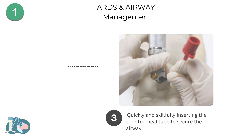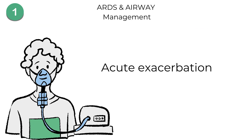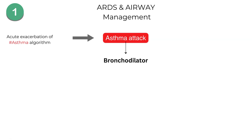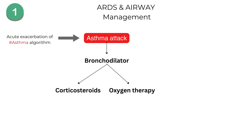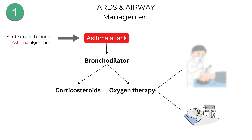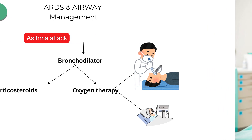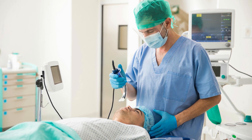For severe asthma attacks, follow the acute asthma exacerbation algorithm. Administer high-dose inhaled bronchodilators like albuterol, give systemic corticosteroids to reduce inflammation, and provide oxygen therapy. If necessary, use non-invasive ventilation or mechanical ventilation to support breathing. To learn the rapid sequence intubation procedure, please watch the video right here.